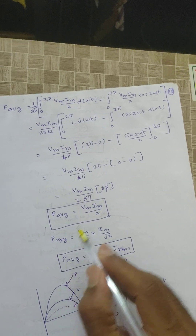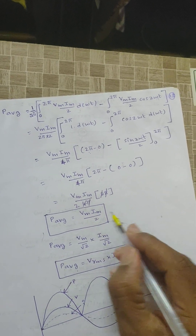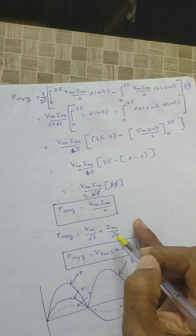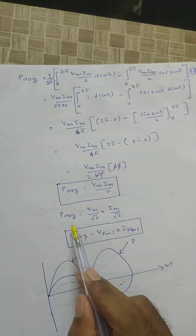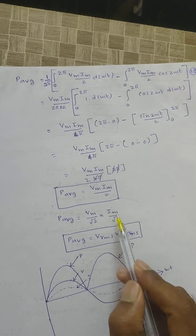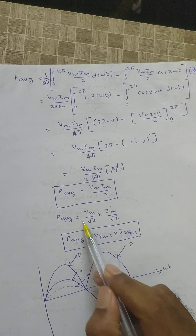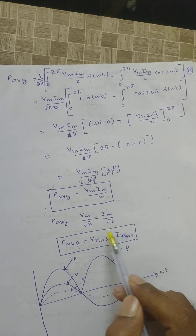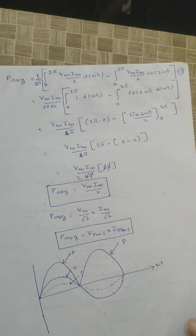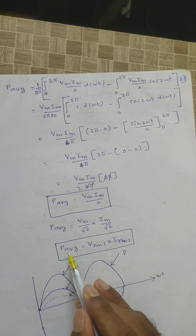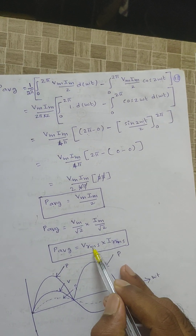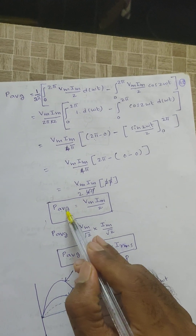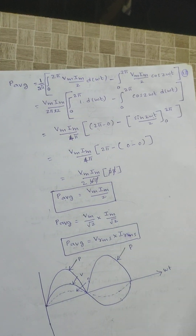This value Vm × Im / 2 can be written as (Vm / √2) × (Im / √2). Since Vrms = Vm / √2 and Irms = Im / √2 for a sinusoidal waveform, the average power in case of a pure resistor equals Vrms × Irms, or in terms of maximum values, Vm × Im / 2.